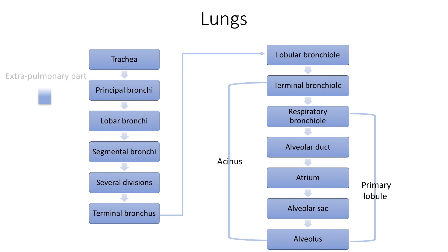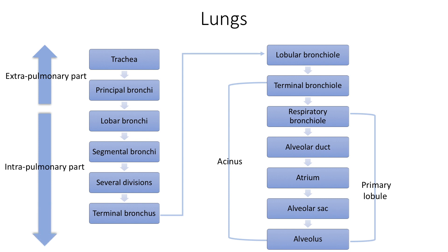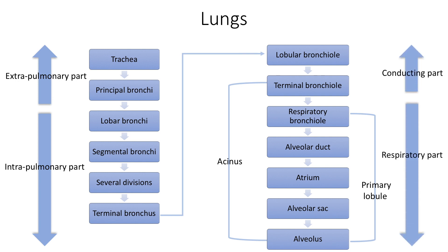Airway passage up to the level of principal bronchi is the extrapulmonary part, whereas from the lobar bronchi up to alveoli is the intrapulmonary part. Airway passage starting from the nose up to the level of terminal bronchiole forms the conducting zone, whereas airway passage starting from the respiratory bronchiole all the way to the alveoli forms the respiratory zone, where actual gas exchange occurs. Throughout its length, the airway passage becomes progressively narrower, walls become progressively thinner, and the lining epithelium becomes progressively flattened.